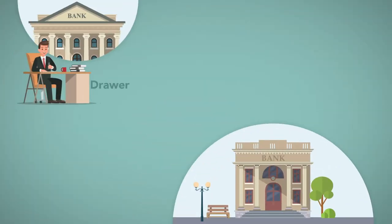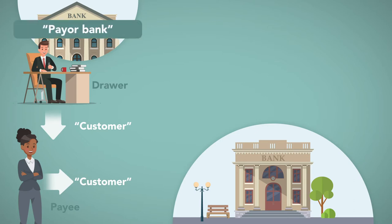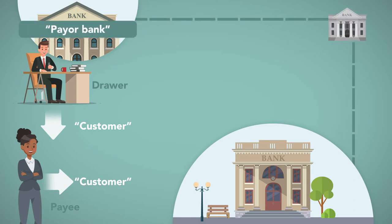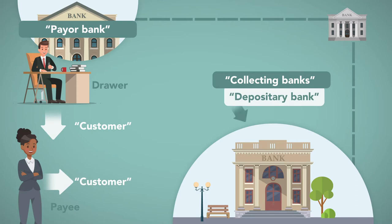The drawer who issues a check is called the 'customer,' and the check's payee is also called a 'customer' when she goes to cash or deposit a check. The bank that hosts the check writer's account is called the 'payer bank.' The other banks involved in the check collection process are called 'collecting banks.' The initial recipient of the check is called the 'depository bank,' while the other banks are referred to as 'intermediary banks.'